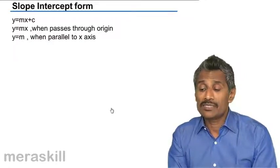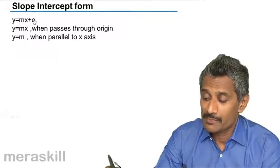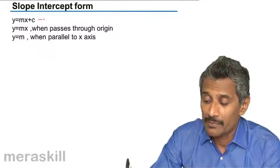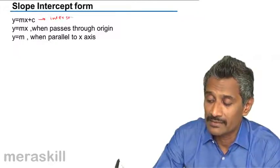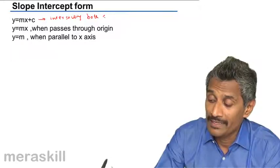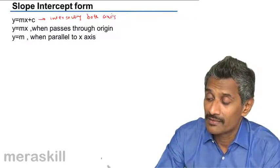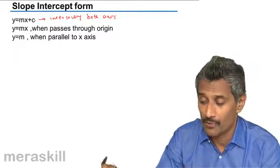So now we have to understand, how do you categorize these lines? Y is equal to mx plus c, what type of line it will be? It will be intersecting both the axes, x-axis and y-axis. Of course, the same line you can write it in the standard form, you can write it in the two-intercept form.